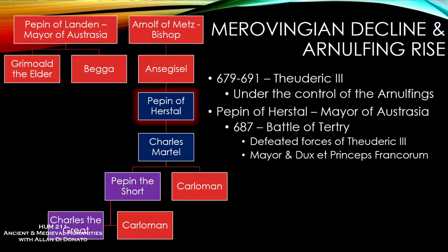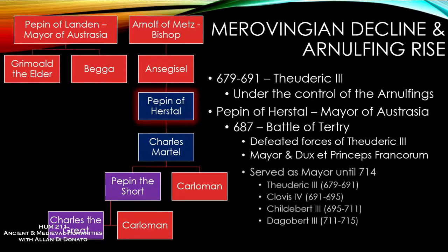Pepin of Herstal was Mayor of Austrasia. In 687, after the Battle of Tertry, he forced King Theuderic to reunite the realm and accept him as the sole Mayor of the Palace, granting him the title 'dux et princeps Francorum' — Latin for 'the duke and leader and first man among the Franks.' He served as Mayor until his death in 714 under a number of different Merovingian kings — Theuderic III, Clovis IV, Childebert III, and Dagobert III.